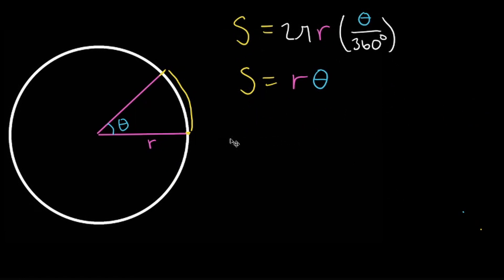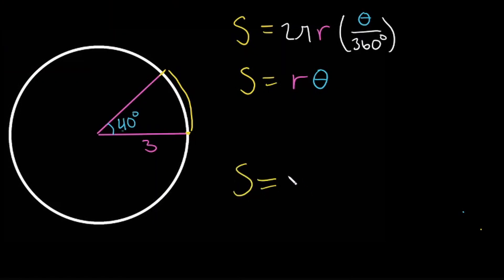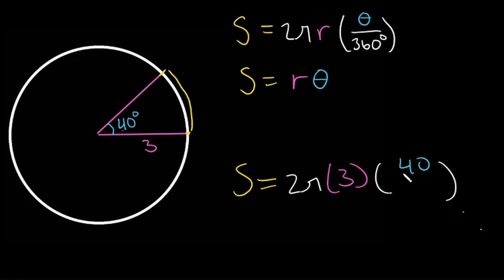Now that we know the formula for arc length, let's put it into use. Let's say theta is 40 degrees and our radius is 3. We have our angle in degrees, so we use the degrees formula: s = 2π times 3 times 40 over 360.